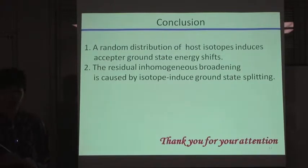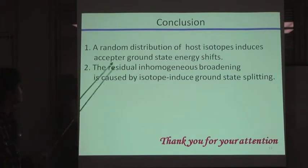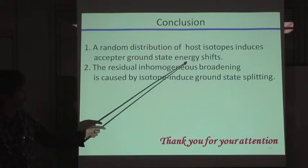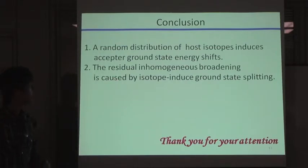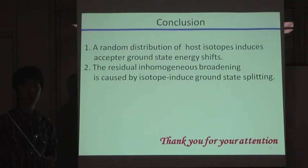Now, let me summarize my presentation. First, a random distribution of host isotopes induces acceptor ground state energy shift. And then, the residual inhomogeneous broadening is caused by the isotope-induced ground state splitting. That's all. Thank you for your attention.